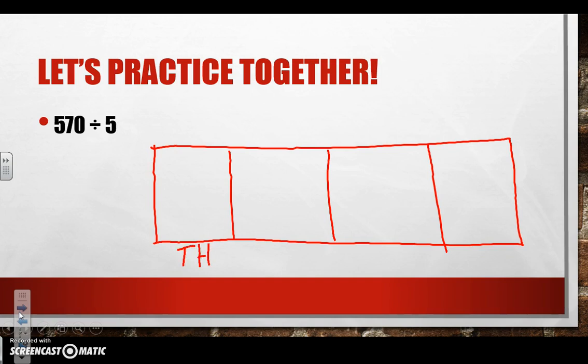Remember that our thousands are all on the very left, then our hundreds, then our tens, and then our ones. We need to look at our problem, 570. We are not going to use the thousands place, so remember so we don't get confused we need to go ahead and cross it out.